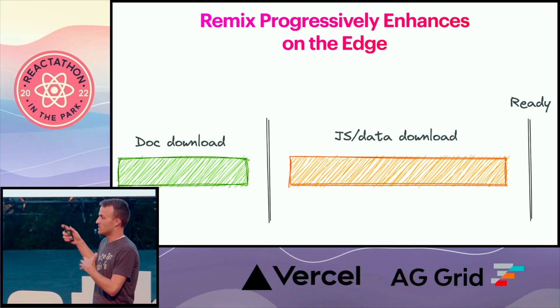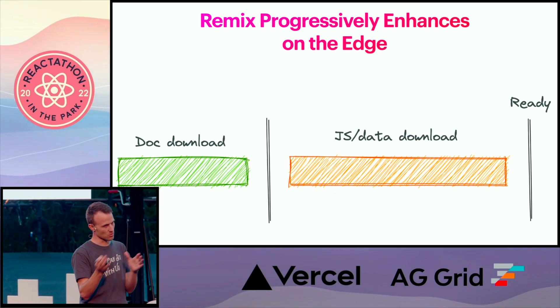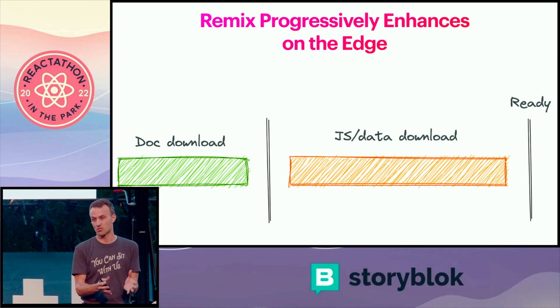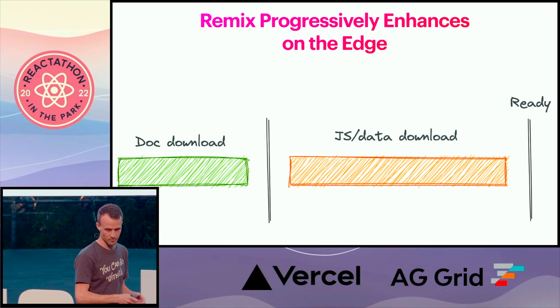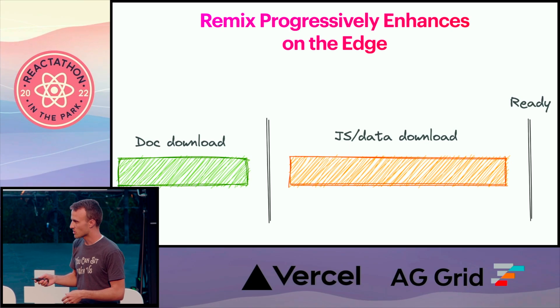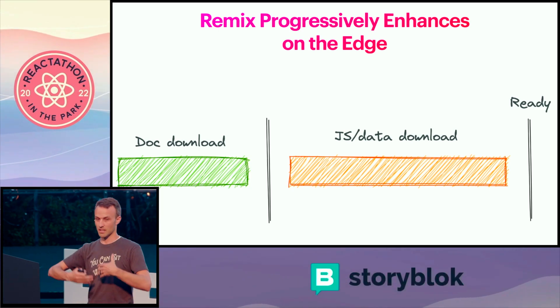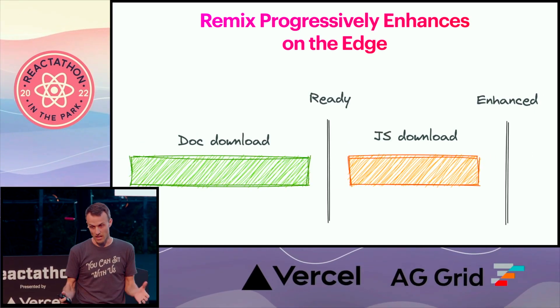In lots of websites we're building with React, we first download the document with script tags for our bundles, then download our JavaScript, execute it, hydrate, and now the app is ready. We can start linking to different things, and mutations happen on submit event, prevent default, all that stuff. But with progressive enhancement, if you can make the server-rendered HTML use regular forms that the browser understands, then you download the document and the app is ready — you don't need the JavaScript for the app to work, because the browser knows how to do that stuff.